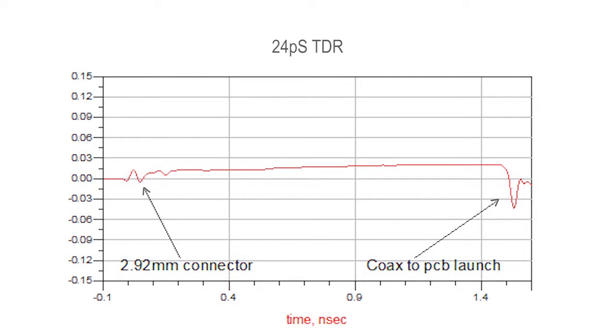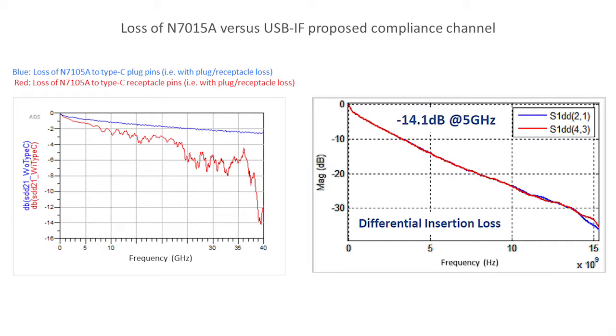You can see the TDR and how it's optimized. The loss of the high-speed fixture is much less than the USB-IF channel spec, so it can be ignored for early investigative work. Low loss and high signal integrity allow more accurate and stable de-embedding of the fixture.